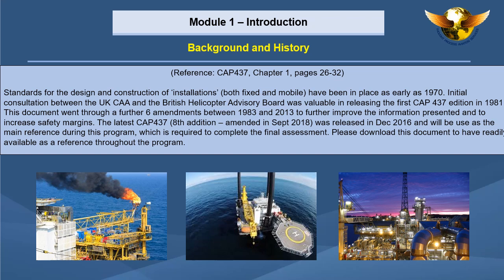Standards for the design and construction of installations, both fixed and mobile, have been in place as early as 1970. Initial consultation between the UK CAA and the British Helicopter Advisory Board was valuable in releasing the first CAP 437 edition in 1981. This document went through a further six amendments between 1983 and 2013 to further improve the information presented and to increase safety margins. The latest CAP 437 8th edition was released in December 2016 and will be used as the main reference during this program. Please download this document to have it readily available as a reference throughout the program.